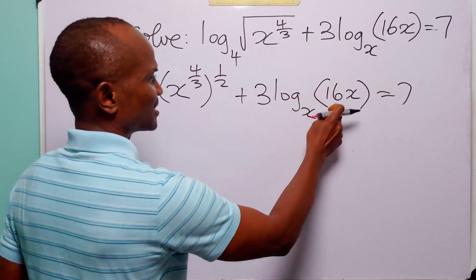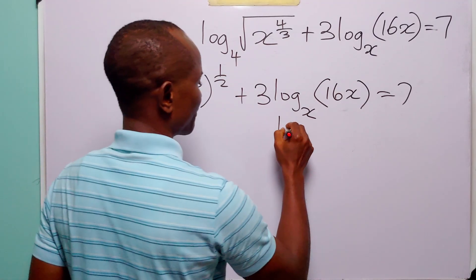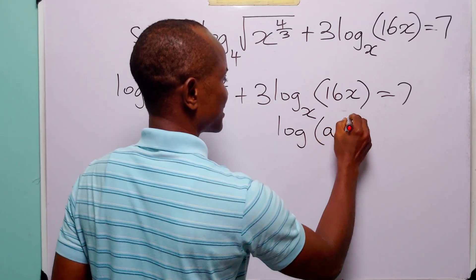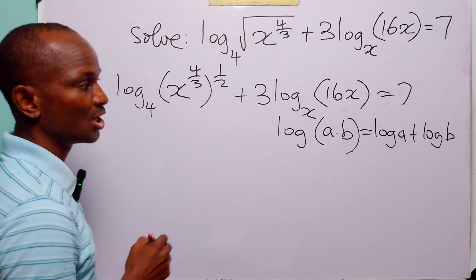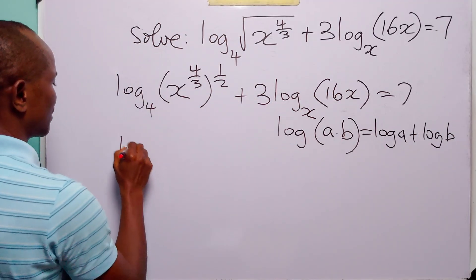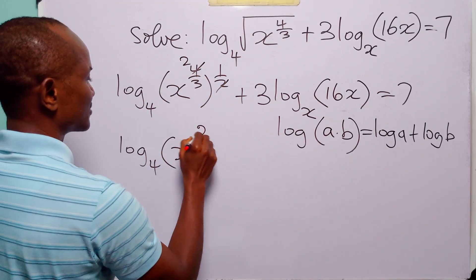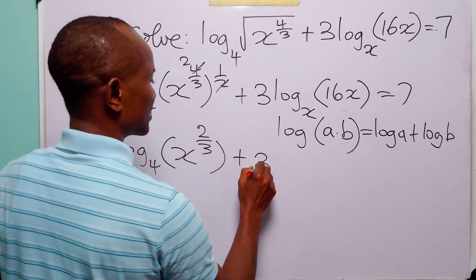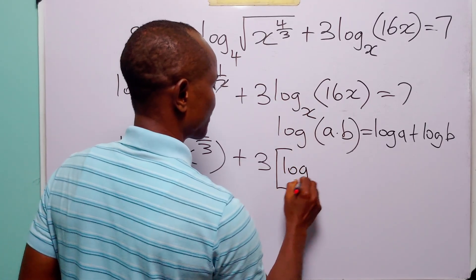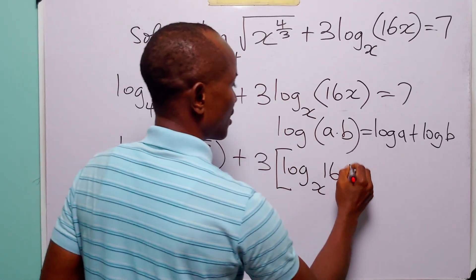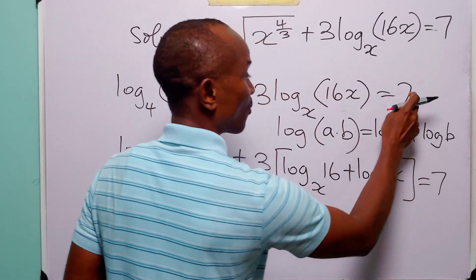Now look at this second term. Here we have 16x, which of course is equal to 16 times x. Remember that log of a times b is equal to log a plus log b. So we have log to base 4 of 2 — and 4 squared is 2 — this is x to the power 2 over 3, plus 3 times log to base x of 16 plus log to base x of x, and this is equal to 7.